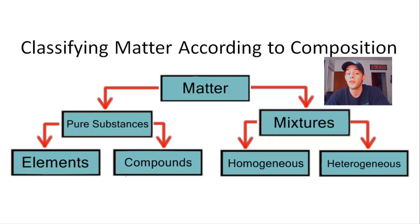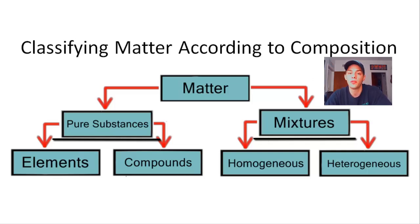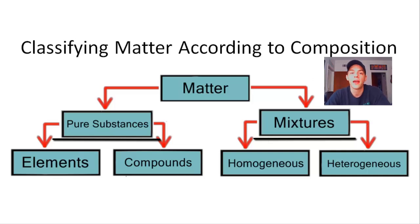Within matter we have two main subdivisions: pure substances and mixtures. What differentiates them is that the composition of a mixture can vary from one sample to another, while the same cannot be said for pure substances. So if I had two samples of pure water, those two samples are going to have the exact same composition. Therefore, water is considered to be a pure substance.